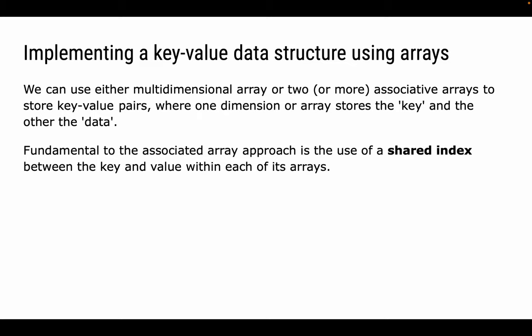So how do we implement key-value data structures? We can use arrays — either multidimensional arrays, or we could use two or more associative arrays. One dimension or array stores the key, and the other stores the data — the value that has been paired with that key. With the associative array approach, there's a shared index between the key and value arrays, which associates a particular key with a particular paired value.